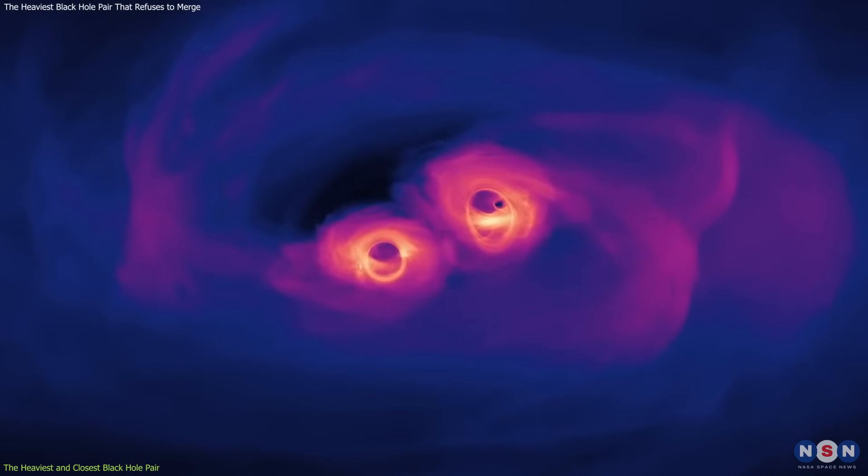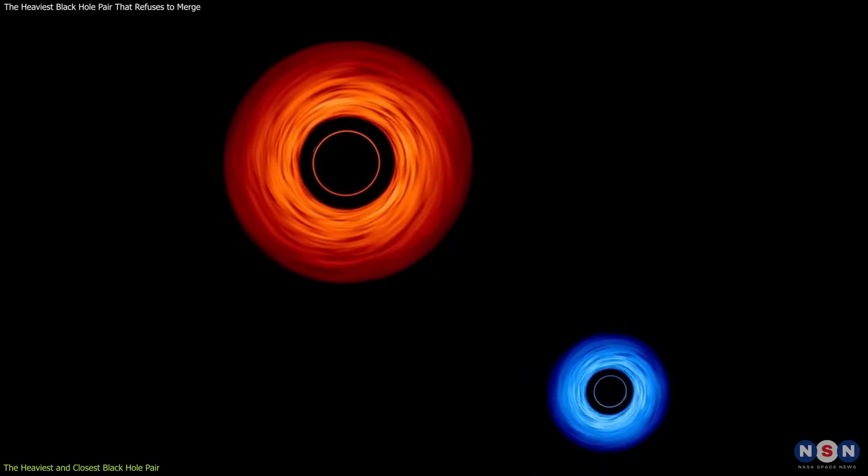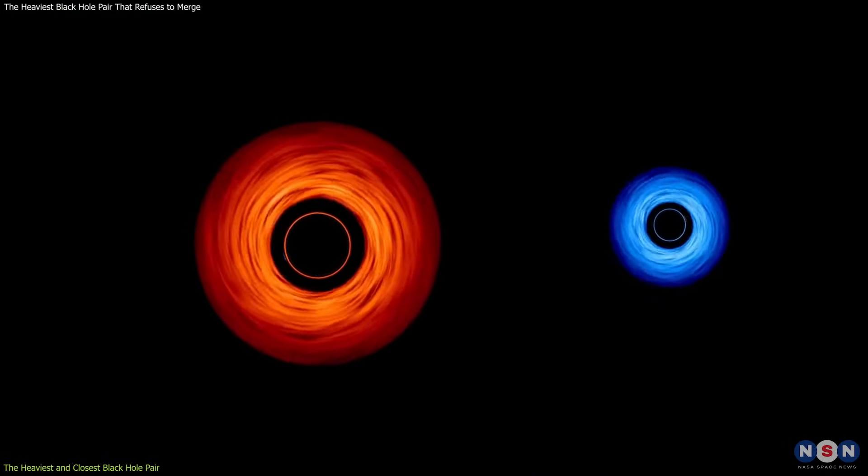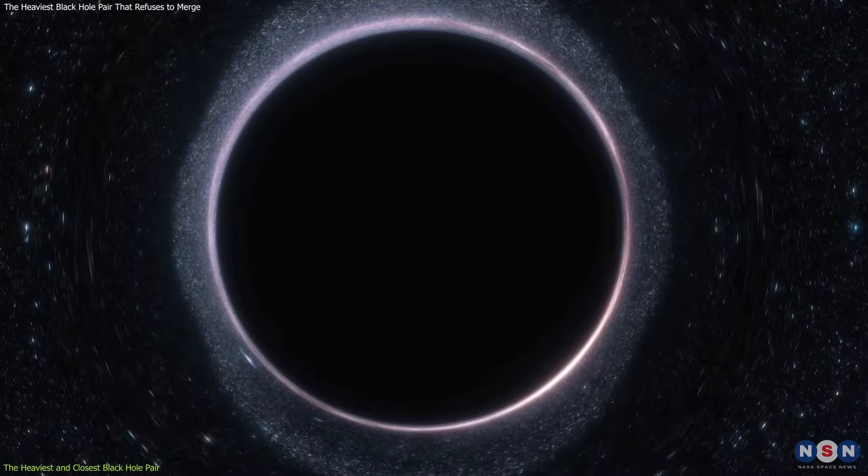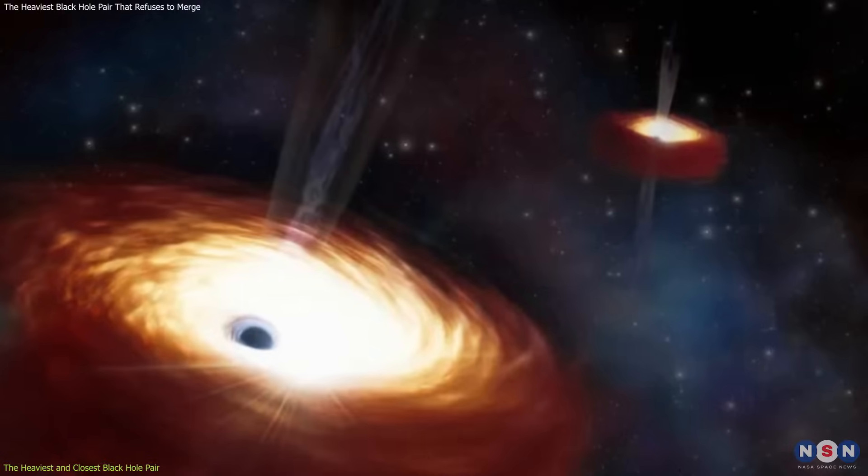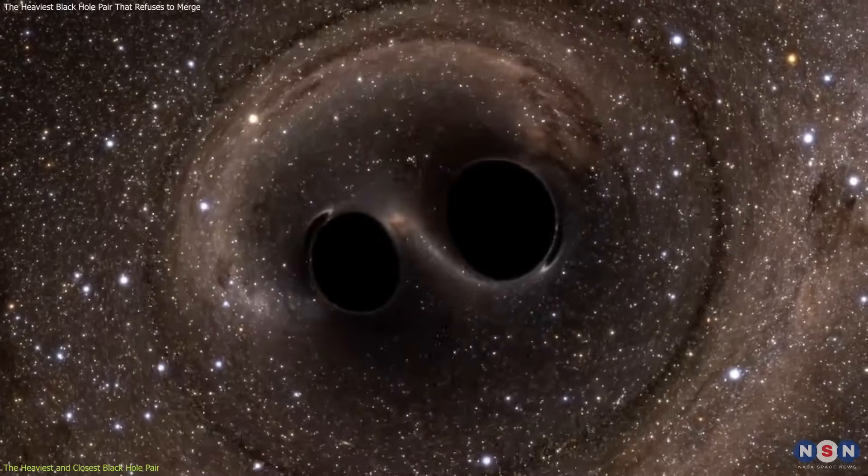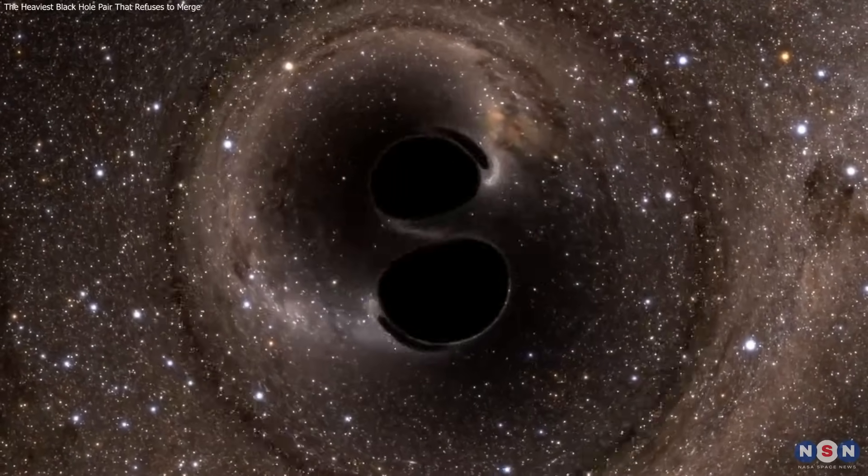This makes them the closest black hole pair ever spotted, and also the slowest, as they take about 30,000 years to complete one orbit around each other. These astonishing numbers raise interesting questions: How did these black holes get so massive and close? What are the effects of their gravity on their environment? And why haven't they merged yet?